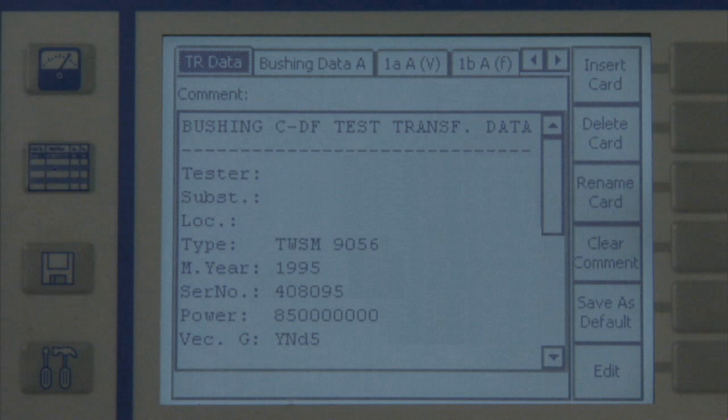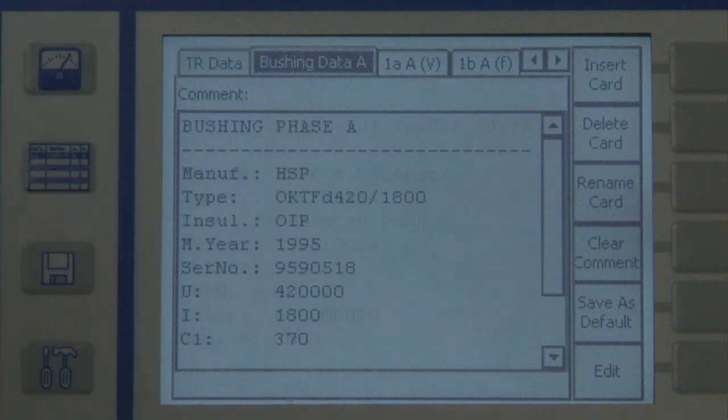The template contains the transformer data followed by the data for the A phase bushing. The first card includes the relevant information about the transformer type and its manufacturer.